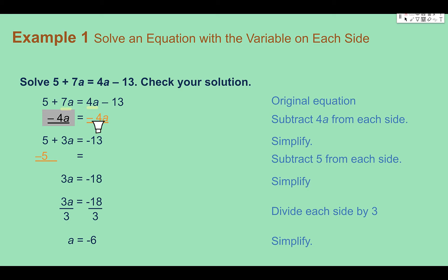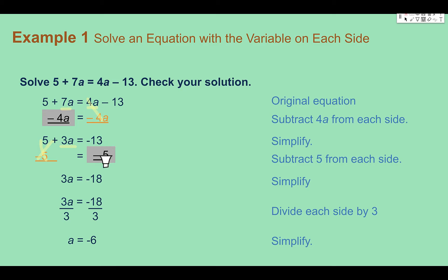First, we're going to subtract 4a from each side. On the right side, 4a minus 4a is 0. On the left side, thinking back to combining like terms, 7a minus 4a is 3a. Now I can start solving for the variable as we've done in the past. I subtract 5 from both sides to get 0 on the left. Negative 13 minus 5 gives negative 18. Then using the division property and dividing each side by 3, I get a equals negative 6. Solving with a variable on both sides is just like solving with a single variable, except I need to use the addition or subtraction property one more time for the variable terms.